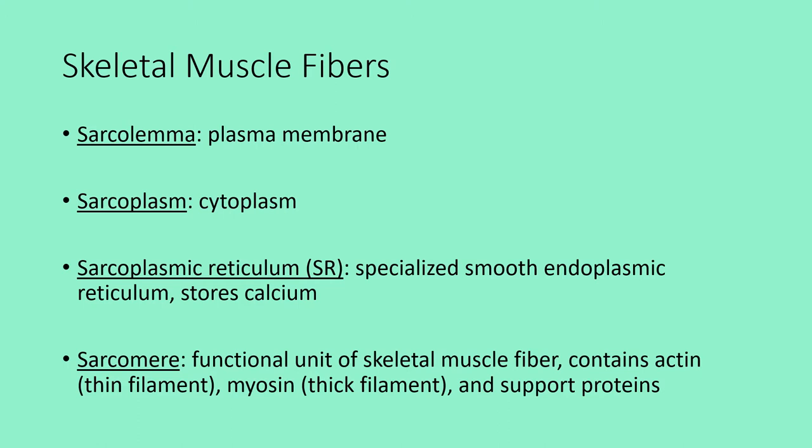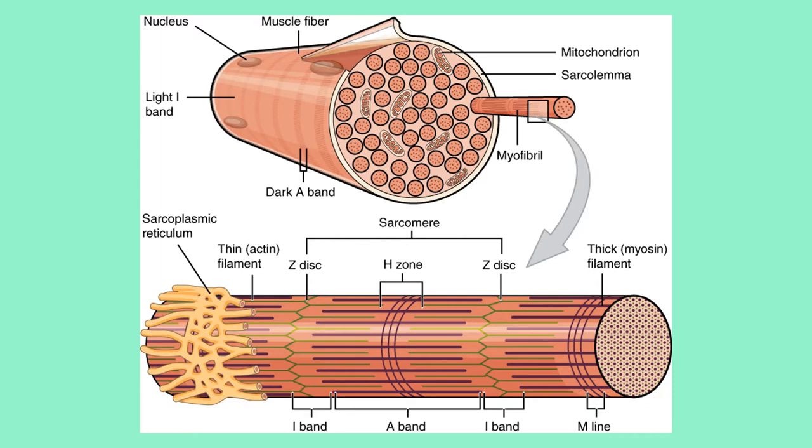Some structures are renamed in muscle tissue. The sarcolemma is the plasma membrane of a muscle fiber. The sarcoplasm is the cytoplasm. The sarcoplasmic reticulum, or SR, is a form of smooth endoplasmic reticulum specialized to store calcium. The sarcomere is the functional unit of the skeletal muscle fiber, containing actin (the thin filament), myosin (the thick filament), and supporting proteins troponin and tropomyosin.